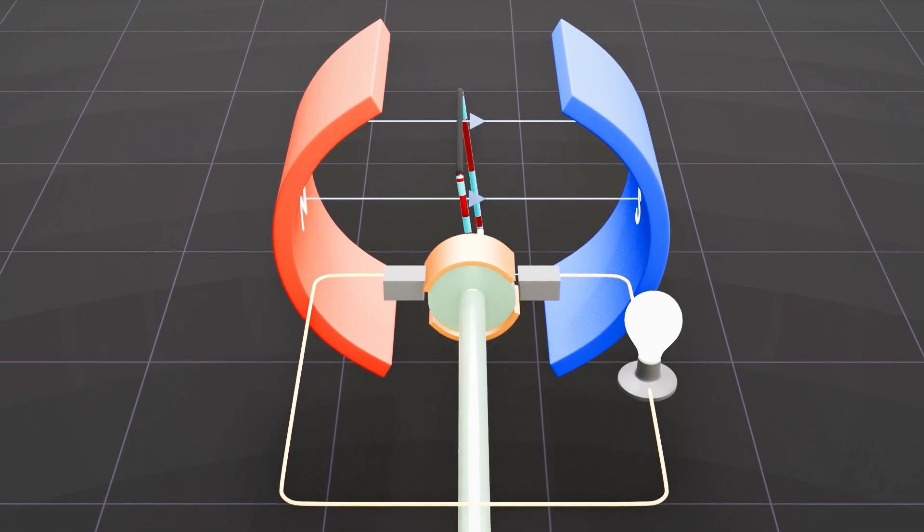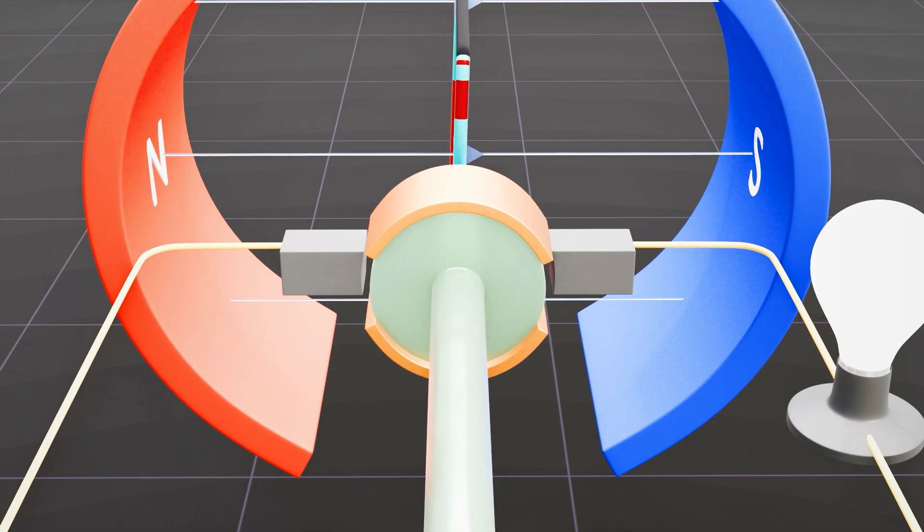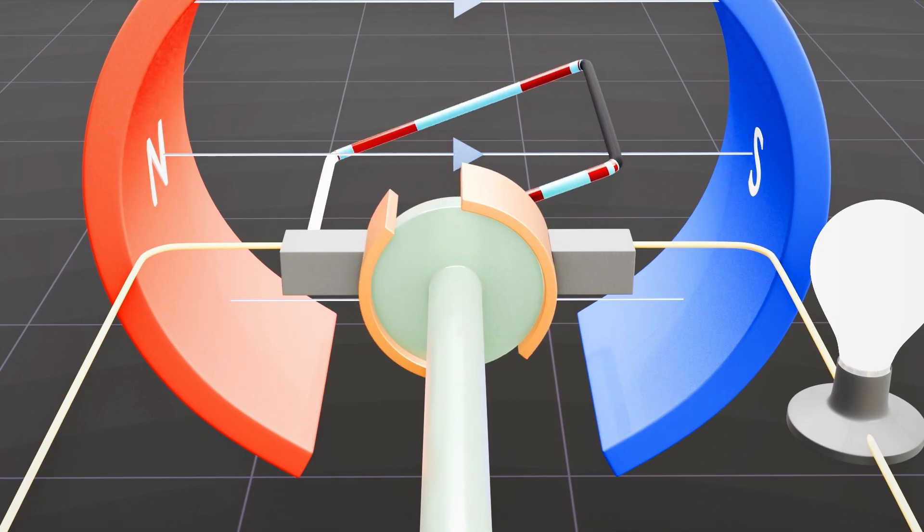When the coil within the generator completes half a circle, the brush's connection with the split rings is reversed at the precise moment when the current changes direction.